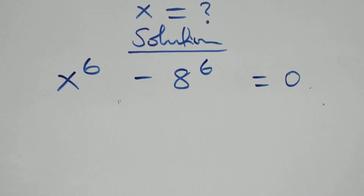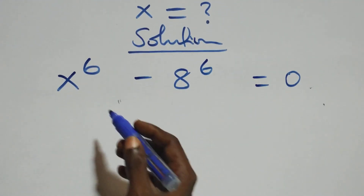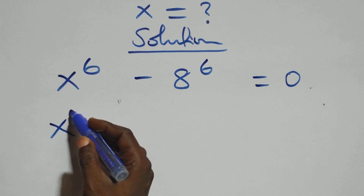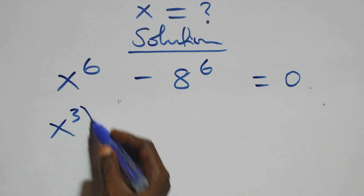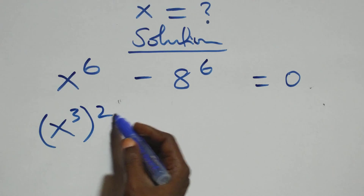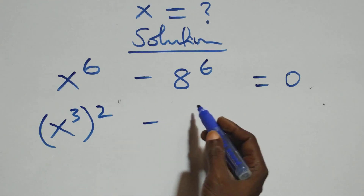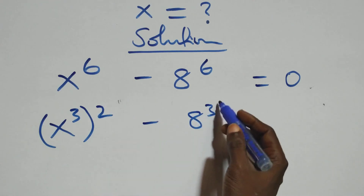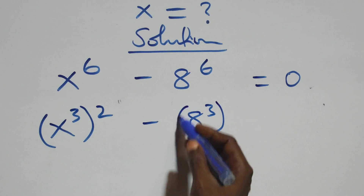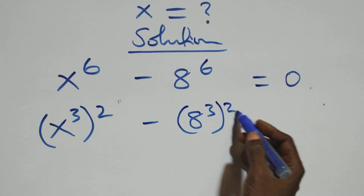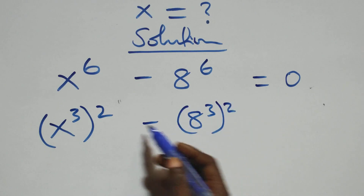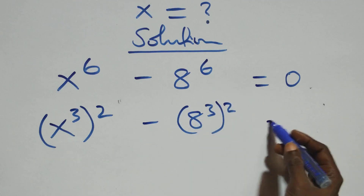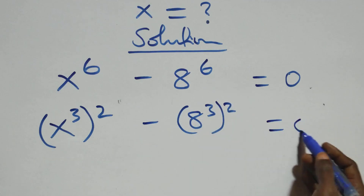The next step here, we can write this as x raised to the power 3, squared, minus a raised to the power 3 squared — since 2 times 3 equals 6 — which is equal to 0.